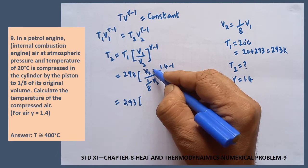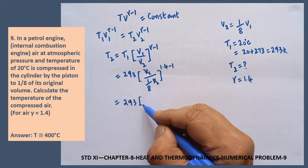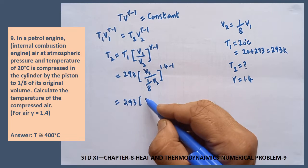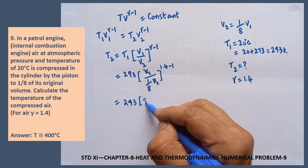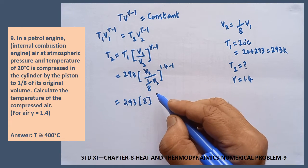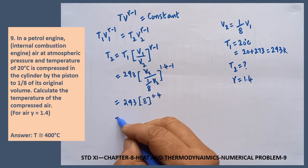And this one becomes 293, 1 by 1 by 8th. Therefore, this one could be written as 8. These two are cancelled, this one becomes 8. 1.4 minus 1, that one becomes 0.4.